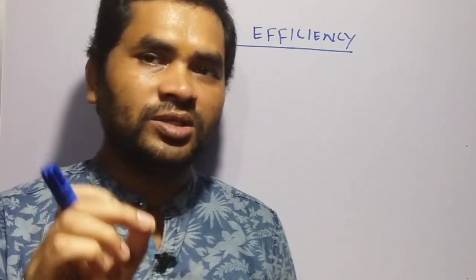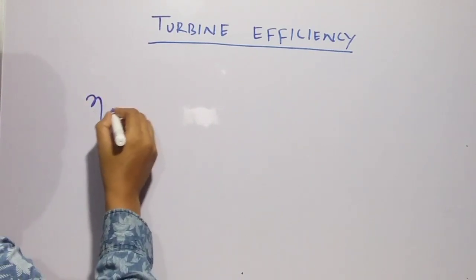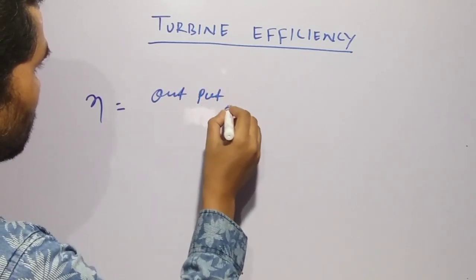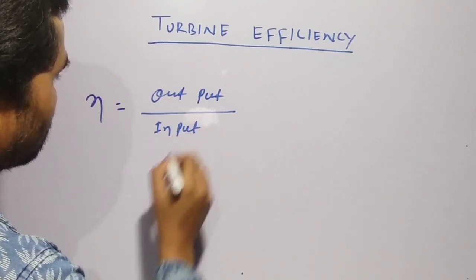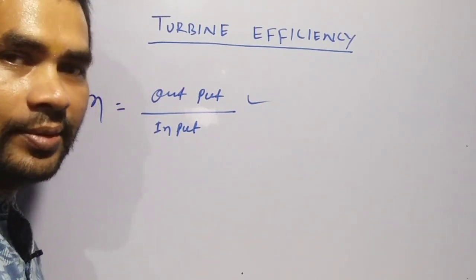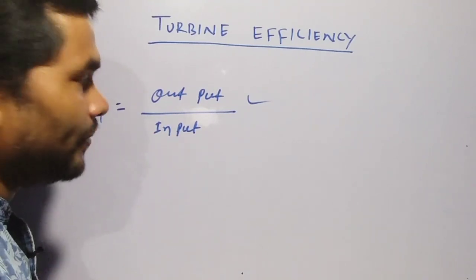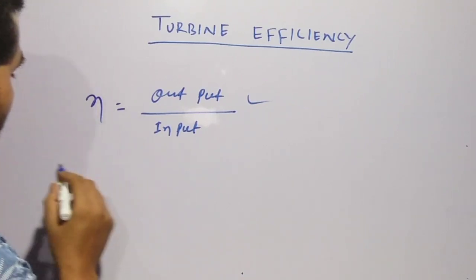Before we progress, first we know the general formula of efficiency. All we know efficiency is equal to output by input. Using this general formula, we can find steam turbine efficiency.